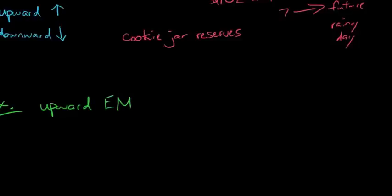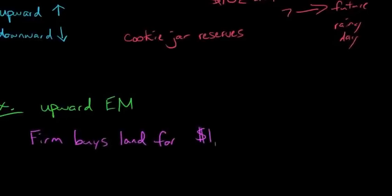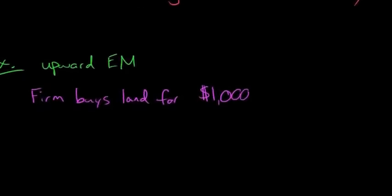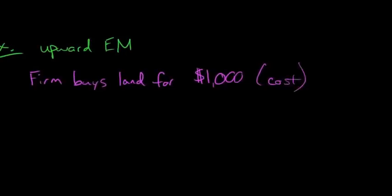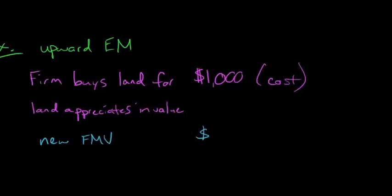In this example, a firm buys land for $1,000. In accounting, when you buy land, you record it at historical cost. Now what's going to happen in our example is this land will appreciate in value. The new fair market value of this land will be $1,700.